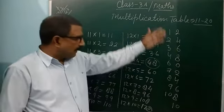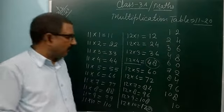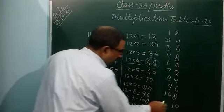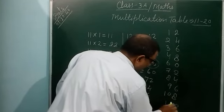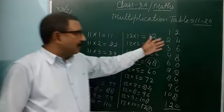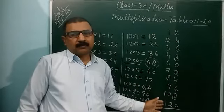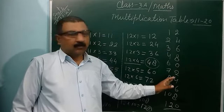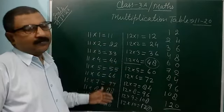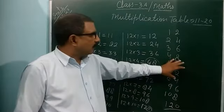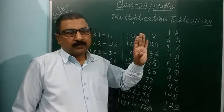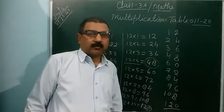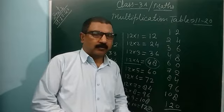So in this way also you can write and understand the method of the table. Here it is 10, but here it has given 1, so it will be 12, and you can write 120. So if you understand, you can use this method. Otherwise, you can write like this. So you can write the table 11 to 20 today and also learn. For today's class, thank you.